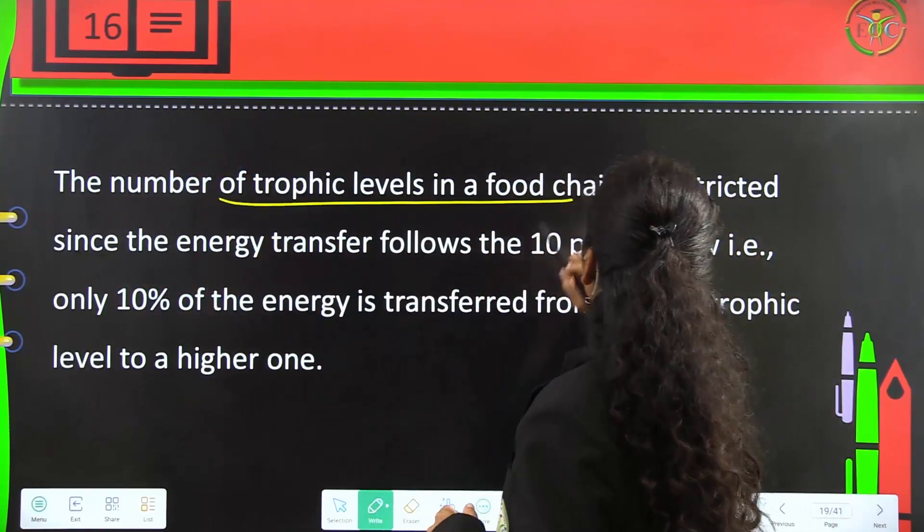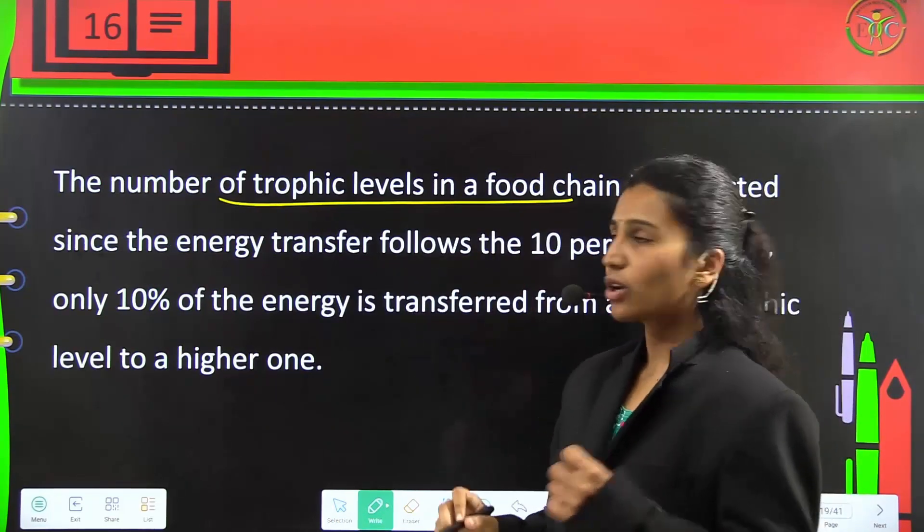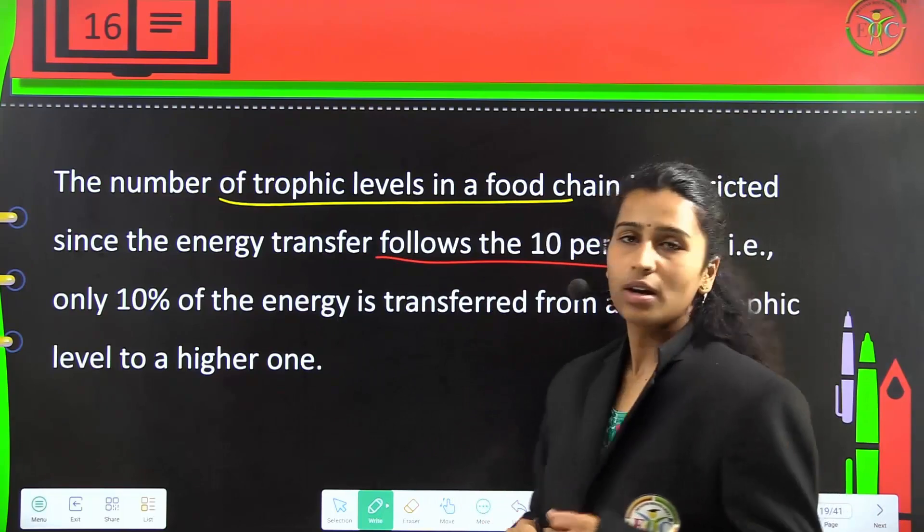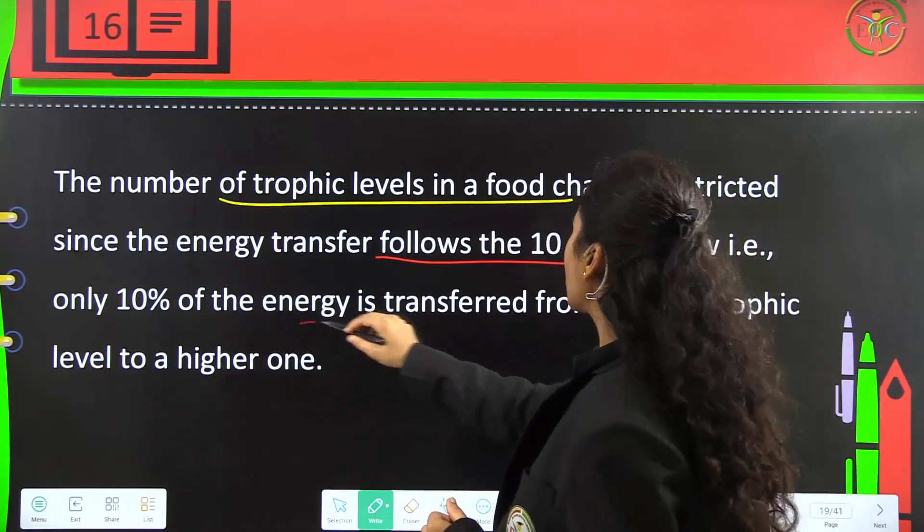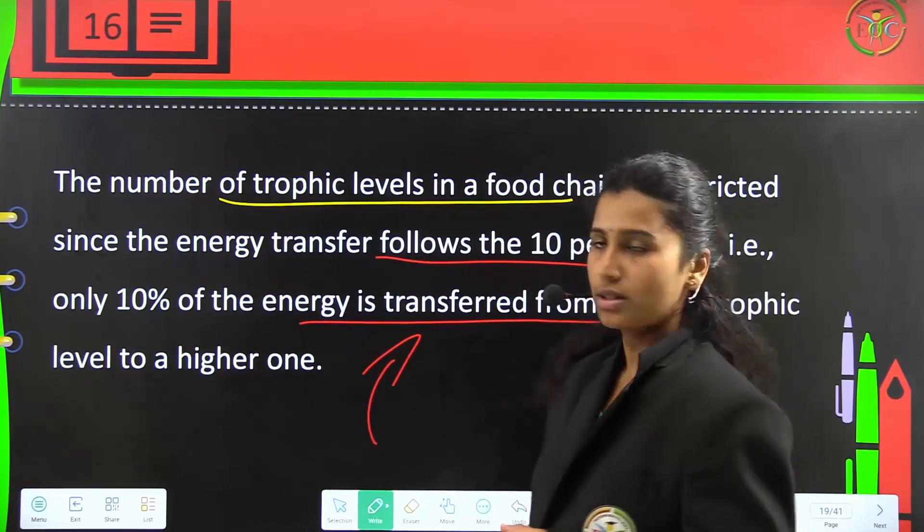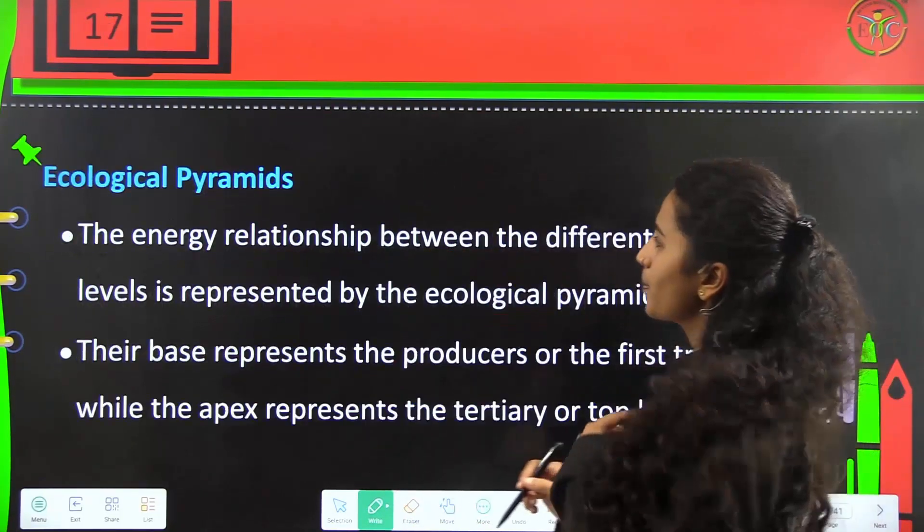The number of trophic levels in a food chain is restricted because energy transfer follows the 10 percent law, where only 10 percent of energy is transferred from lower trophic level to higher trophic levels.